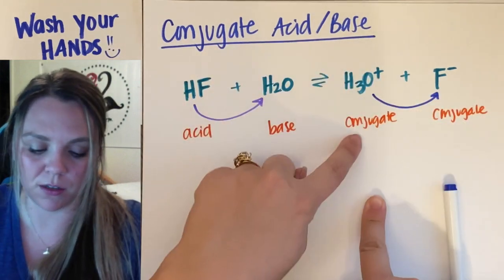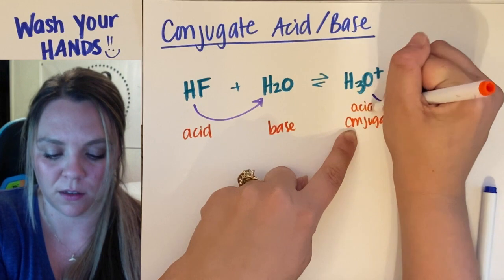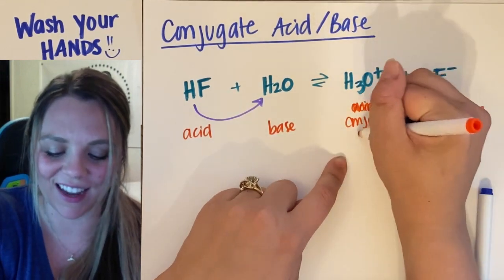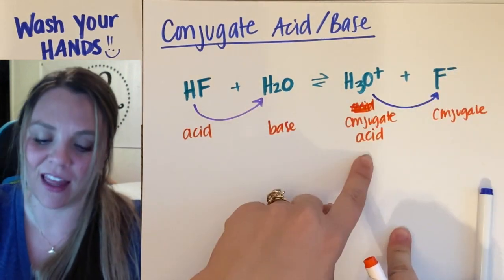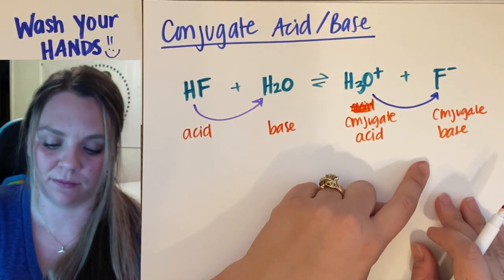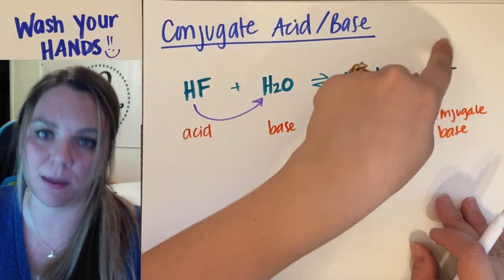So in my reverse reaction, this guy is my conjugate acid. Conjugate acid. This guy would be my conjugate base. He donated the proton, he accepted the proton.